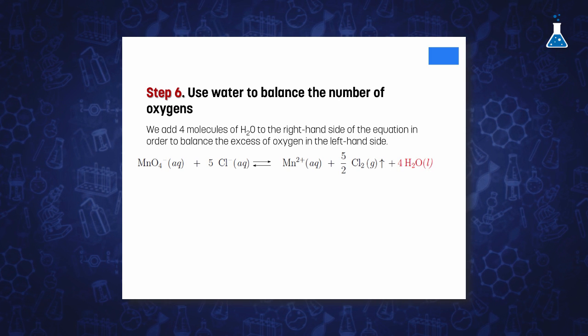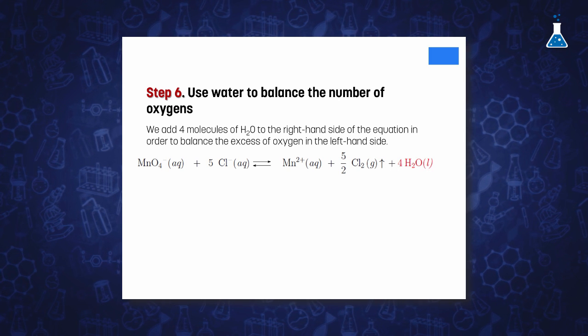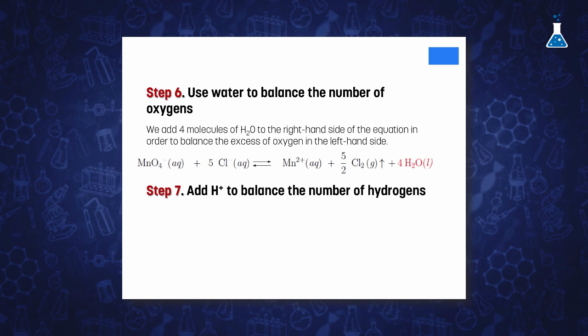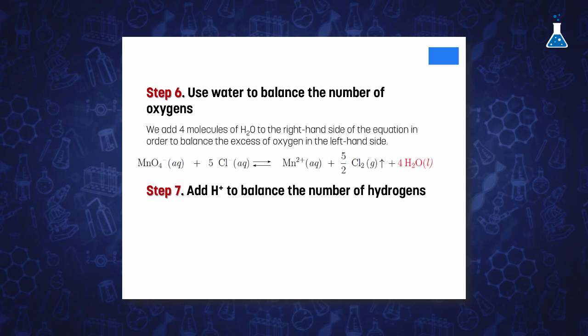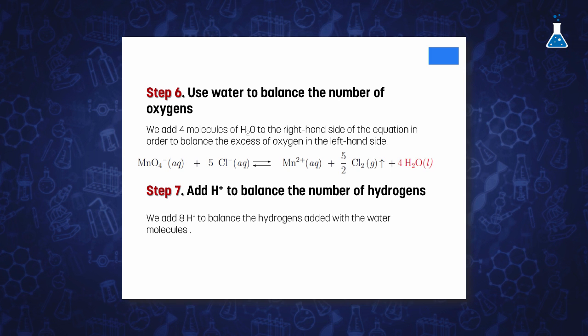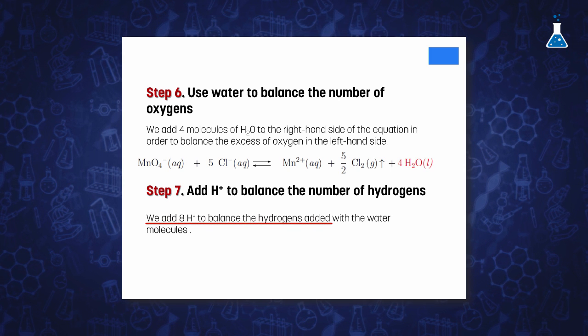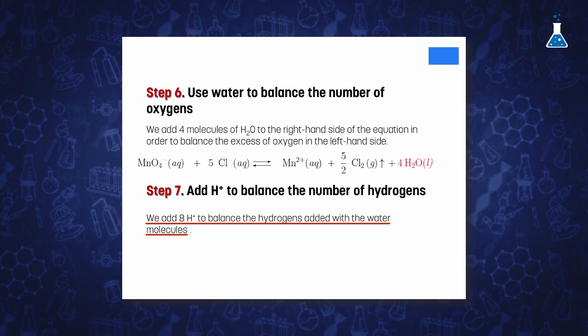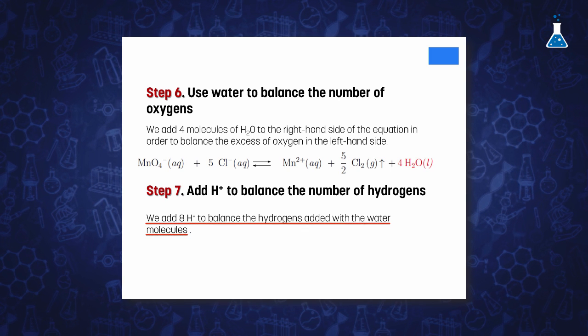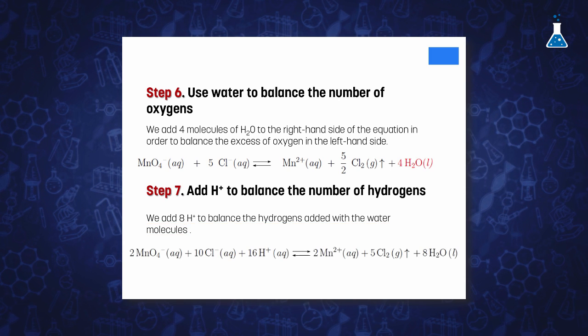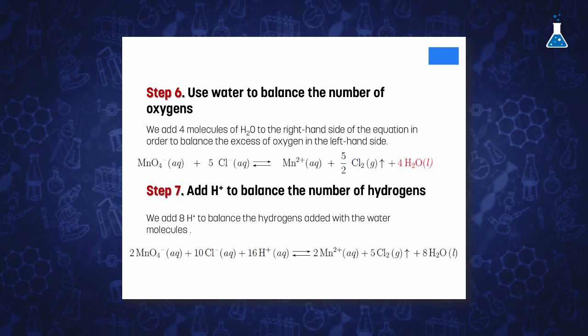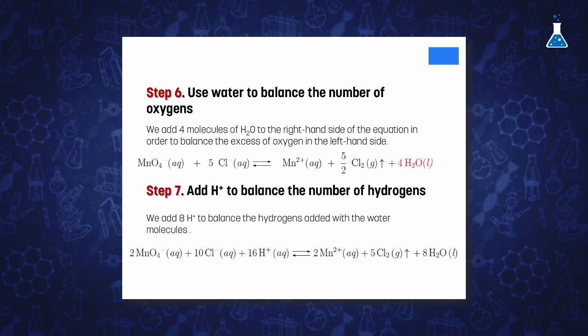Finally, since the reaction takes place in aqueous acid solution, we now add the appropriate number of H-plus ions to complete the balancing. Therefore, H-plus ions are added to the left-hand side of the equation. The reaction can be doubled to show it in a more convenient way to finally obtain our final equation.